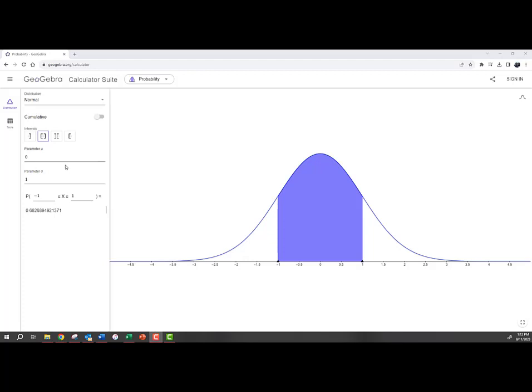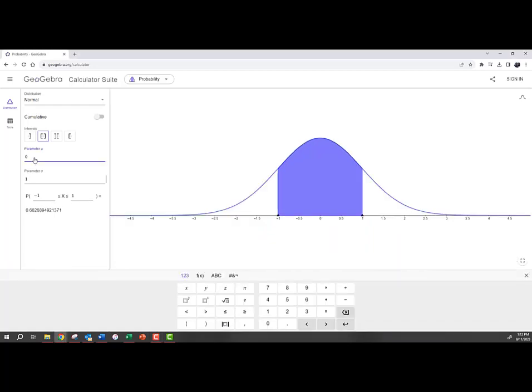You also notice that it defaults to the standard normal curve where the mean is 0, standard deviation is 1, and then it gives us the area between those two z scores of negative 1 and 1. Well we can adjust this so it fits our data. We can change this to the mean of women, standard deviation of women.